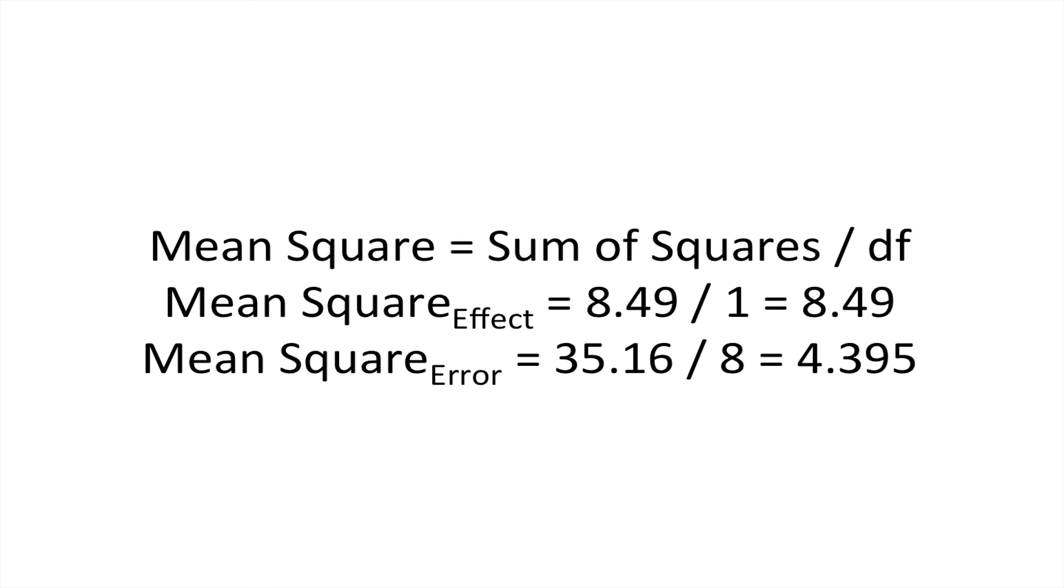We can then create the mean squares that are going to be compared in our ANOVA. That's the sum of squares, the variability measure we just calculated, divided by the degrees of freedom.